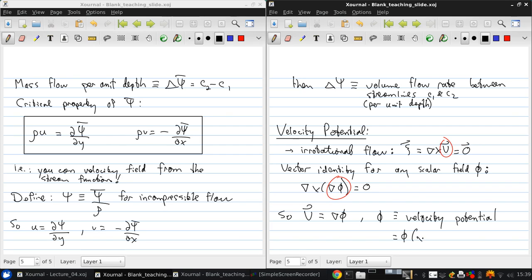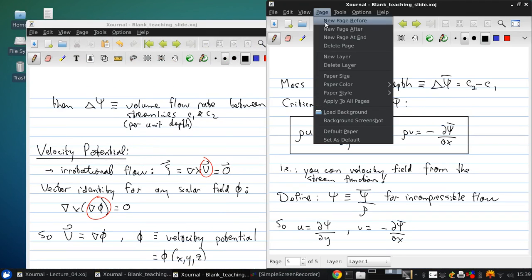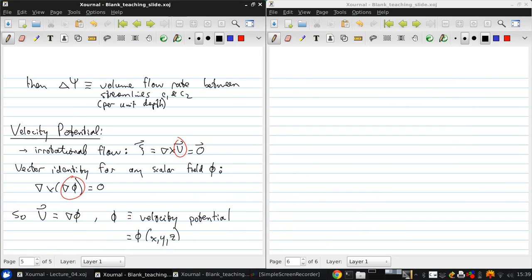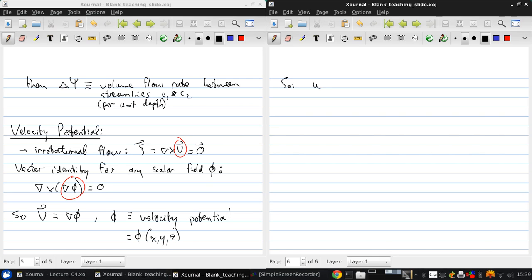This is a function of space. And here, we're not restricted to 2D. This works just as well in three dimensions. What this means is that the x velocity u is d phi dx, the y velocity v is d phi dy, and we'll define the z velocity w equals d phi dz. So this is really easy to remember. The partial derivative of the velocity potential in each direction gives the velocity in that direction.